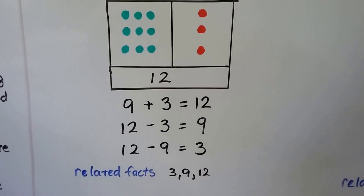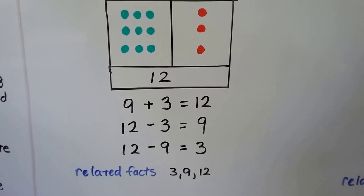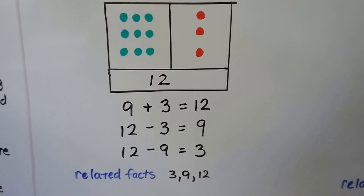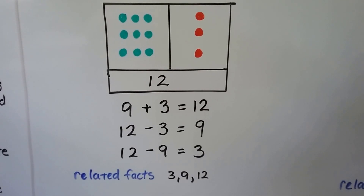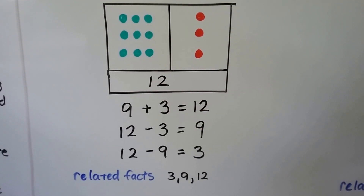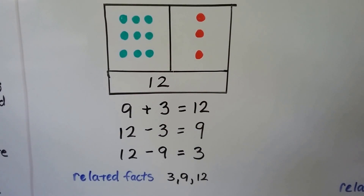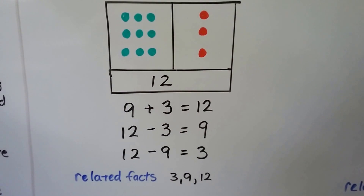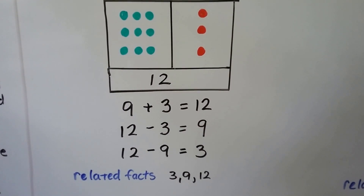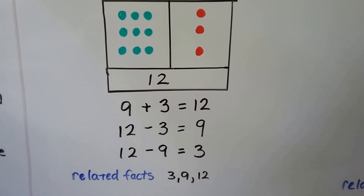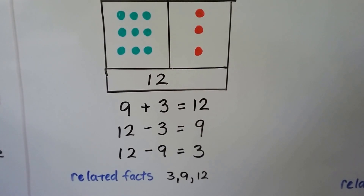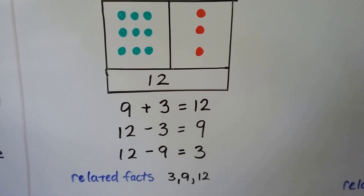Now we've got 9 green dots and 3 red dots — there are 12 dots all together. 9 plus 3 equals 12. If we have 12 dots and we take the 3 red ones away, we'll only have the 9 green ones left. And if we have the 12 dots and take away the 9 green ones, we'll only have the 3 red ones left. The related facts are 3, 9, and 12.